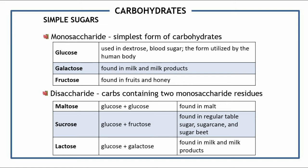Monosaccharide is the simplest form of carbohydrates — you cannot find a simpler type of sugar than this. Examples of monosaccharides include glucose. If you notice, all carbohydrate examples end with '-ose,' which means they contain sugar molecules. Glucose is the most abundant monosaccharide; it is used in dextrose and blood sugar, and it is the form directly utilized by the human body.